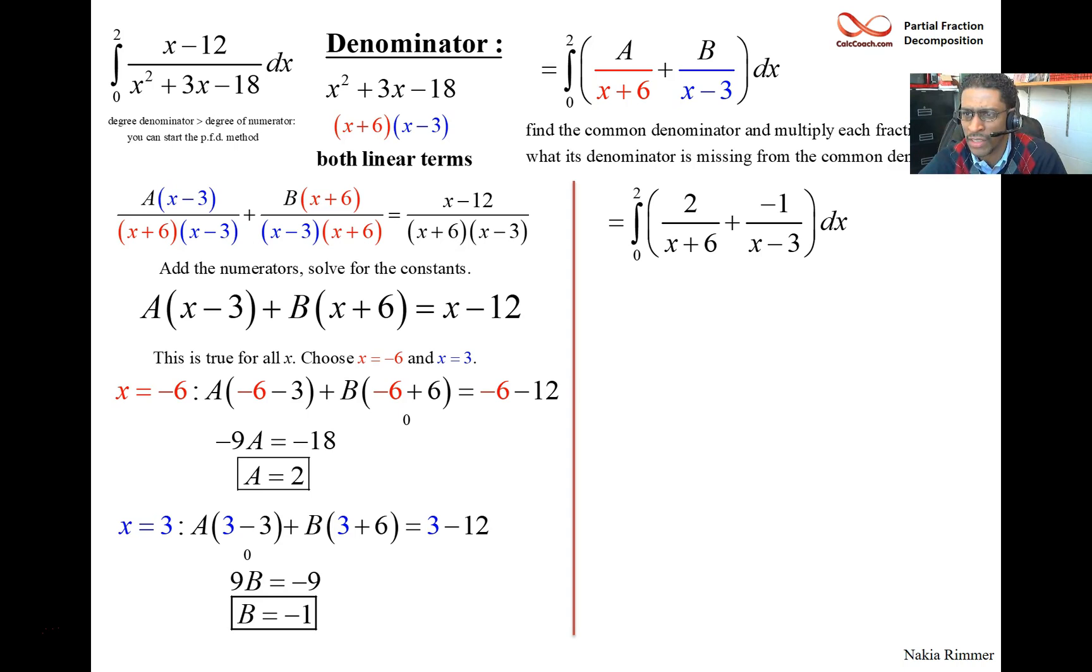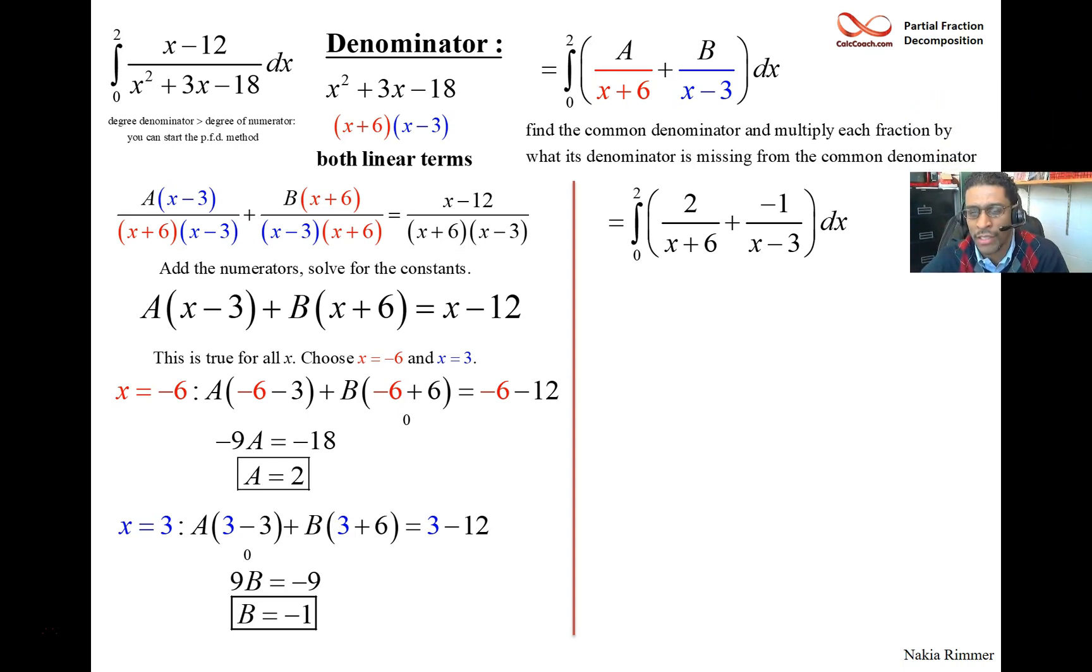And so, our job is to integrate this. This is the one line of calculus. We have 2 over x plus 6 minus 1 over x minus 3. These are just natural logs. Make sure you use absolute values, though.